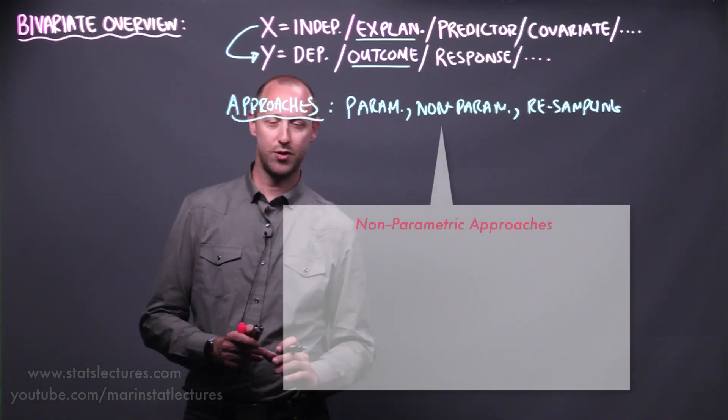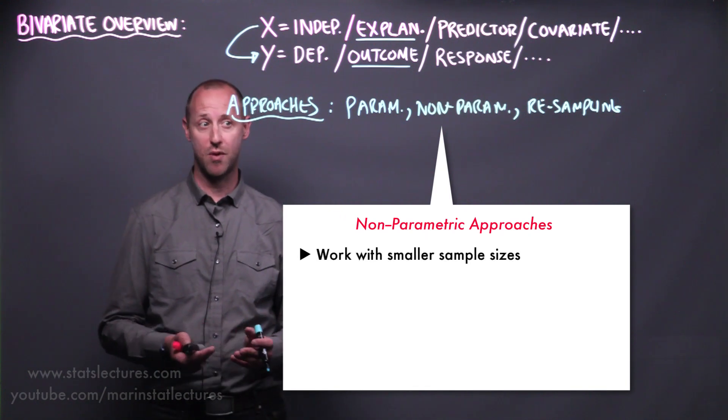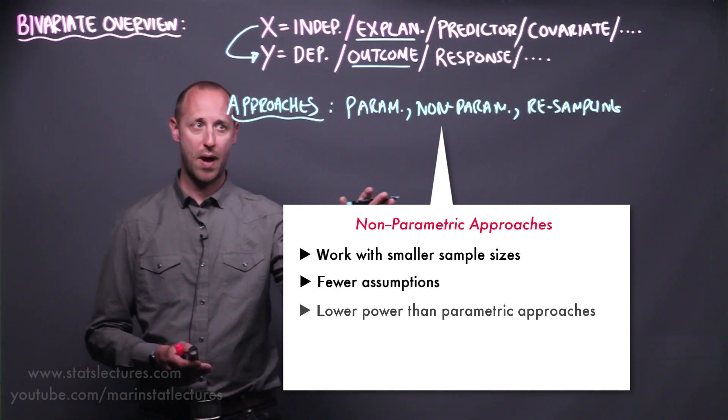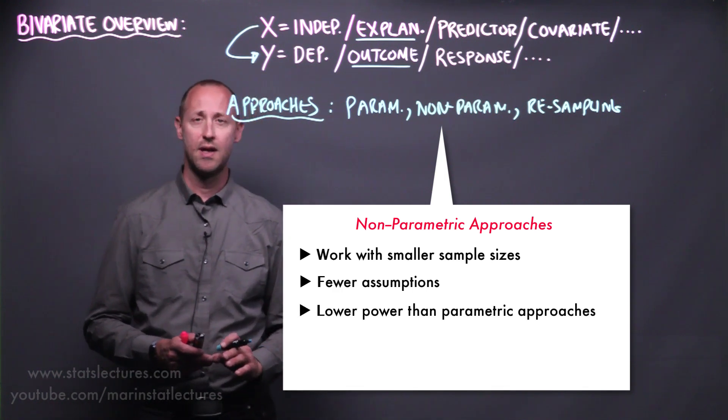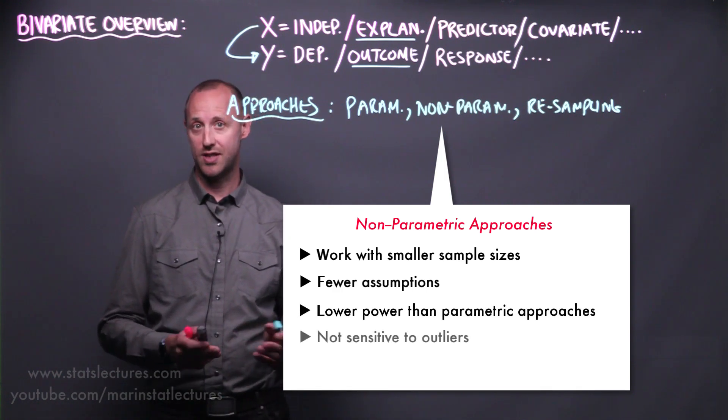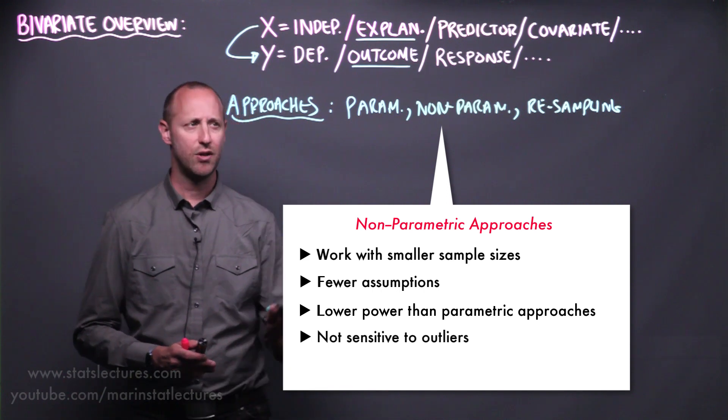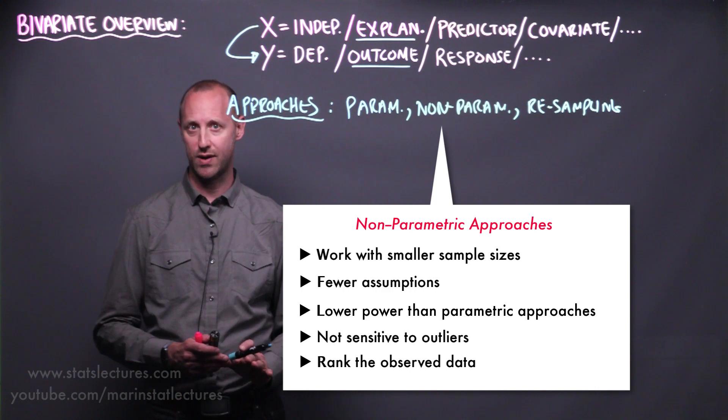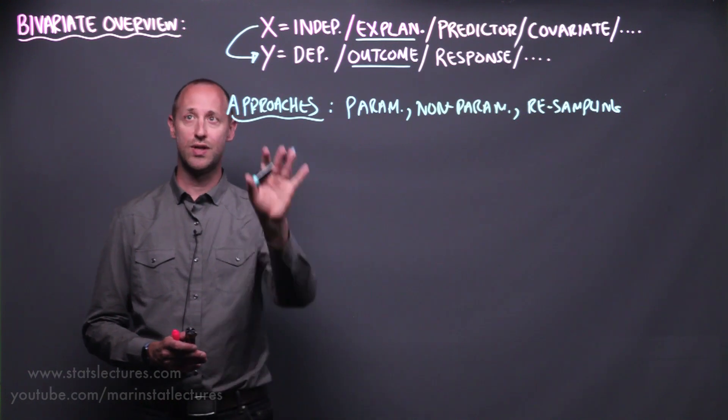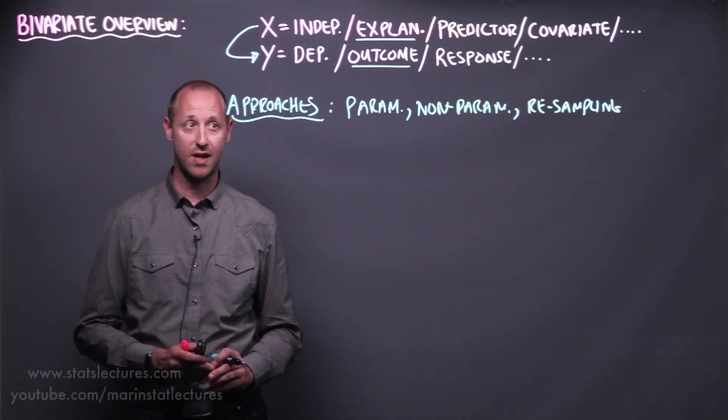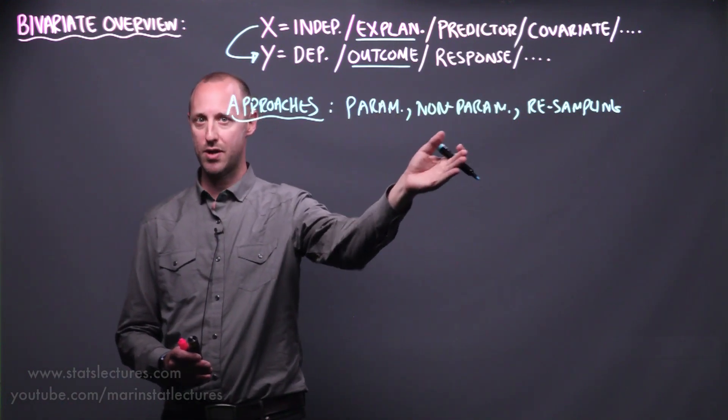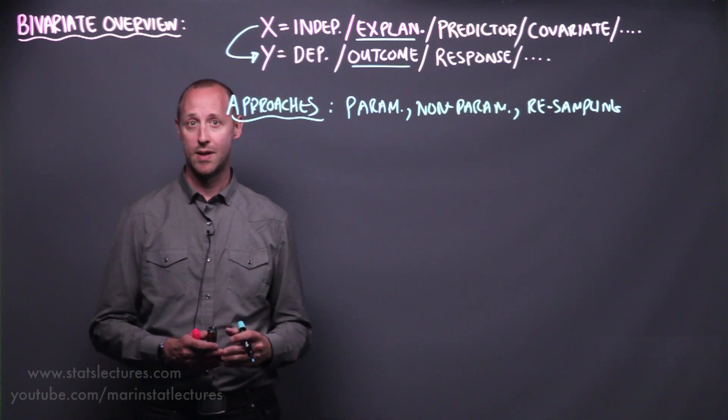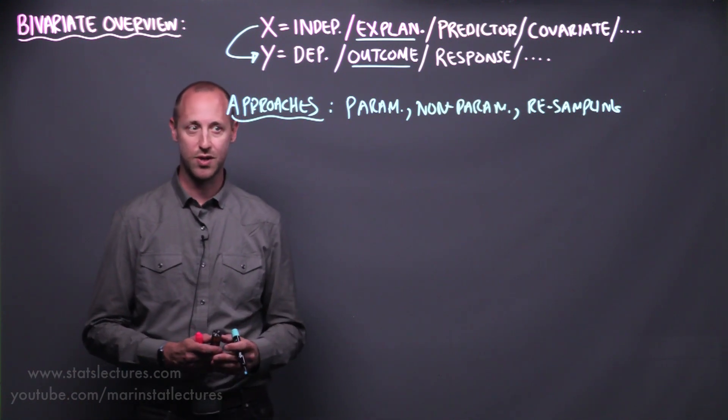Non-parametric approaches tend to work well with smaller sample sizes. They make relatively fewer assumptions. They also have lower power than parametric approaches. And the nice thing about these is they're not sensitive to outliers. They generally work with ranking the observed data rather than the actual numeric values. As we progress through different bivariate approaches of analysis, we'll look at parametric methods, non-parametric, and compare and contrast the two.